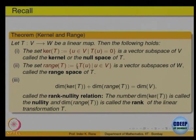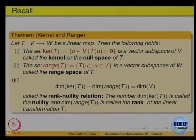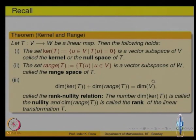Then we define what is called the range. The range is the image set — T(u) for u belonging to the domain V. That is called the range space, and we showed that both of them are subspaces. They form a relation called the rank-nullity relation: dimension of the kernel plus dimension of the range of T equals the dimension of V, the domain space. That is the rank-nullity theorem.